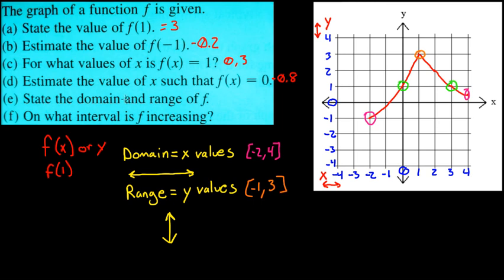Okay. And so that is the answer for E. So you've got negative 2 and a 4, that's your domain. And then your range, negative 1 and 3.